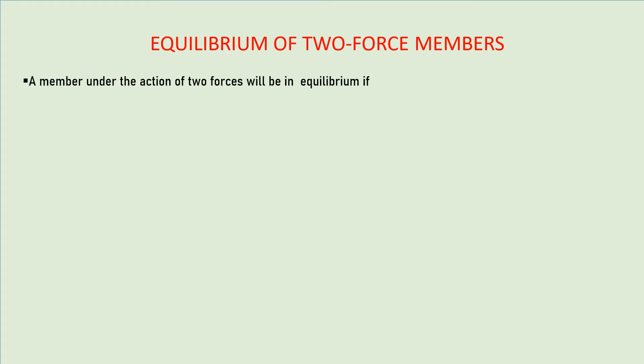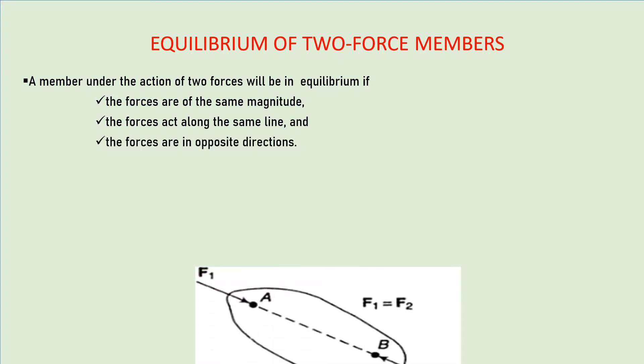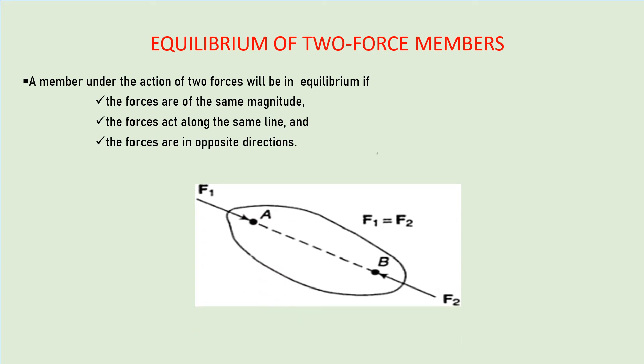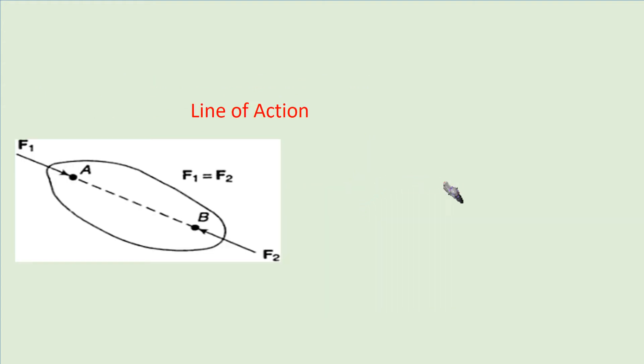Now we will understand the condition for equilibrium of two and three force members. A member under the action of two forces will be in equilibrium if the forces are of the same magnitude, act along the same line, and are in opposite directions. If these three conditions are satisfied, then that component will be in equilibrium under the influence of two forces.